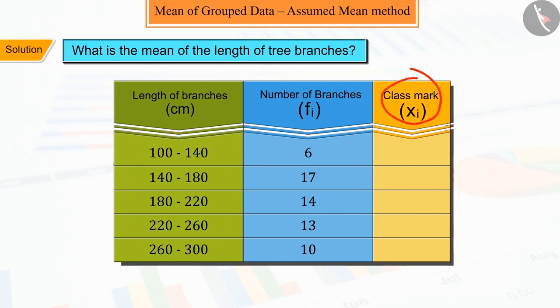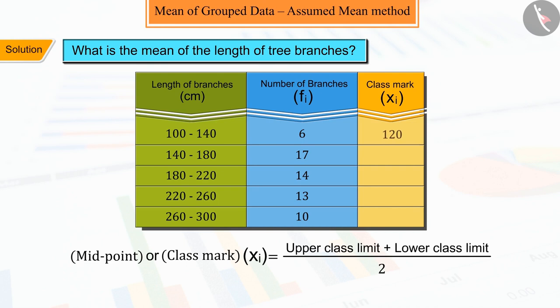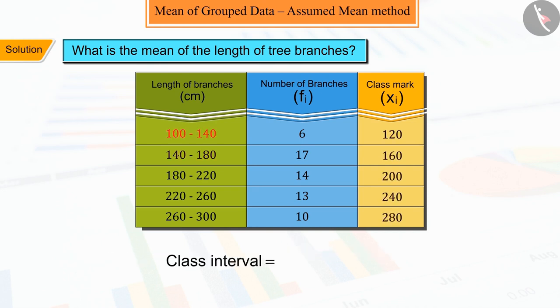we will find the class mark that is midpoint xi, for which we will use the class mark formula, where the class size is 40. Here the number of branches represents the frequency of each class interval, that is, fi.